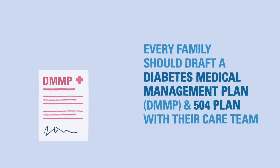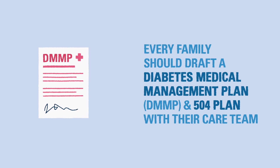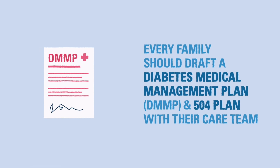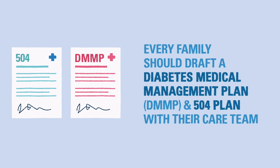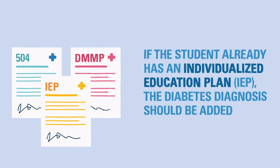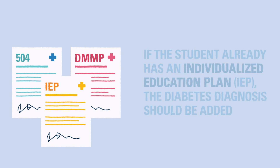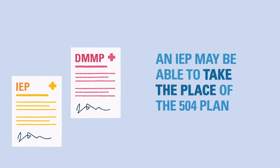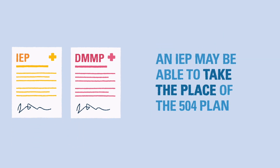This is why it is critical to create a Diabetes Medical Management Plan, often referred to as a DMMP, and a 504 Plan with the child's caregivers and their diabetes care team. If the student already has an Individualized Education Plan, or IEP, we recommend that diabetes be added to the plan. Sometimes an IEP may take the place of a 504 Plan. We'll go over these plans in detail shortly.